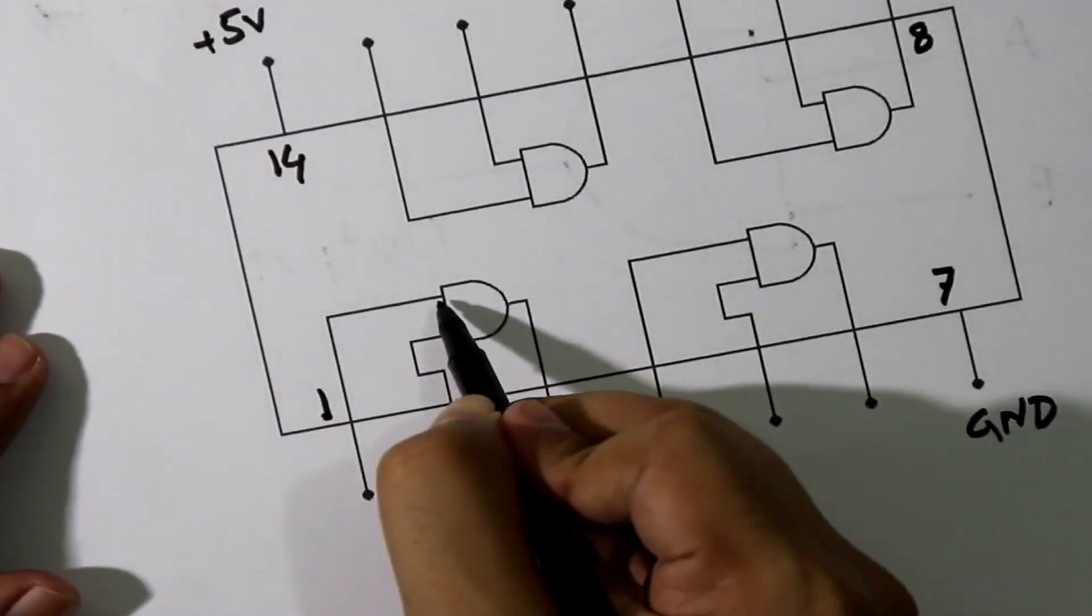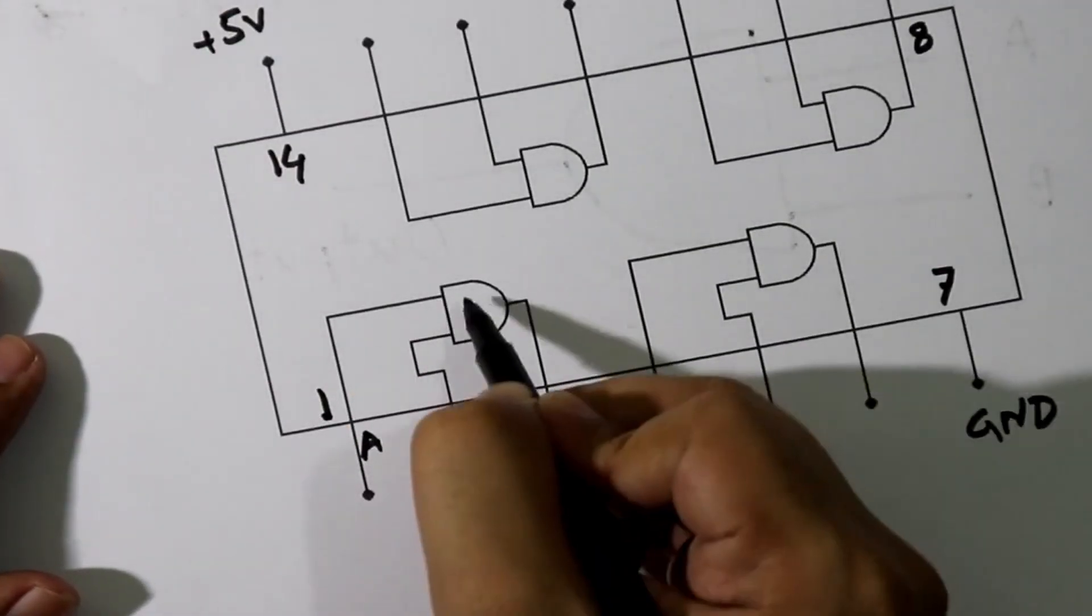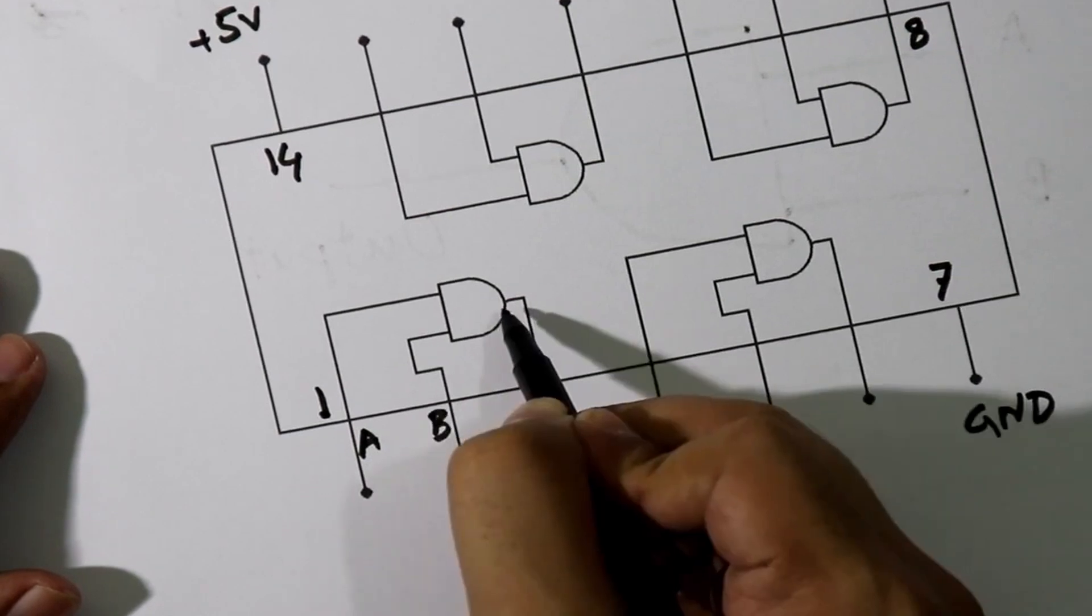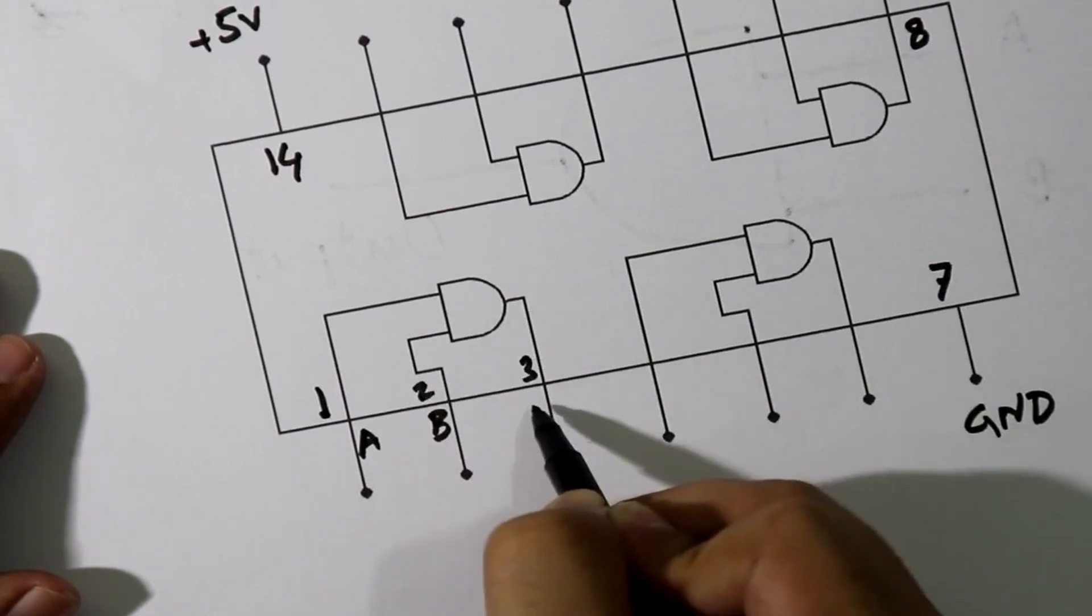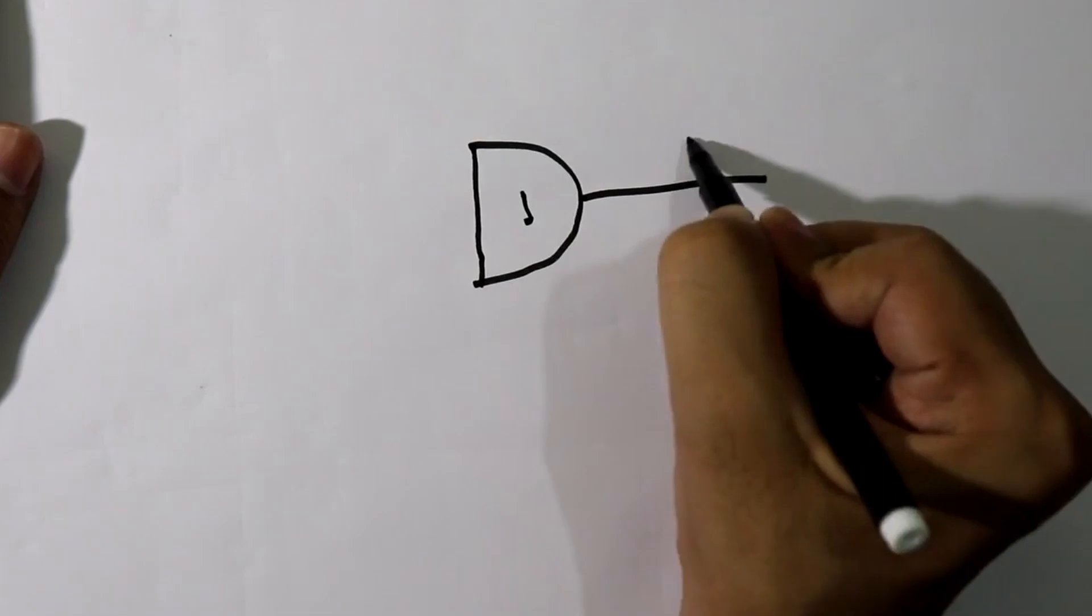Here it is input 1 A. Here it is B and pin number 3 is output. Gate number 1, here it is output.